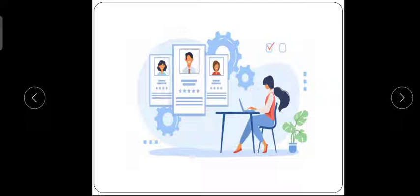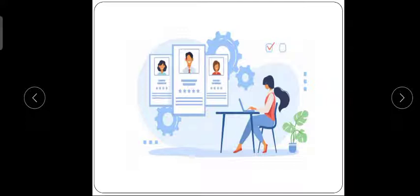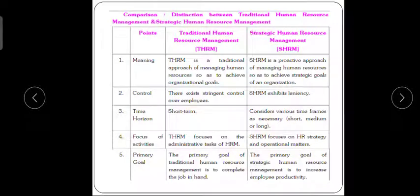By seeing this picture, we can understand this is an example — she's a chart, she's in the HR department, and she's checking which person is suitable for a particular department. For example, this girl has got four stars, and this boy has got five stars. It means this boy is more suitable compared to any other candidate, so she will choose this person for that particular department.